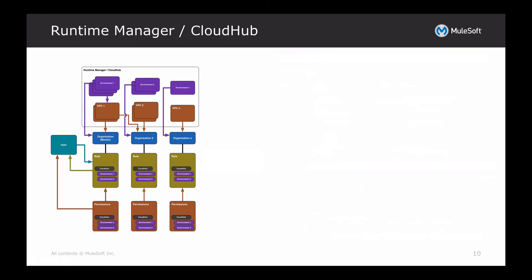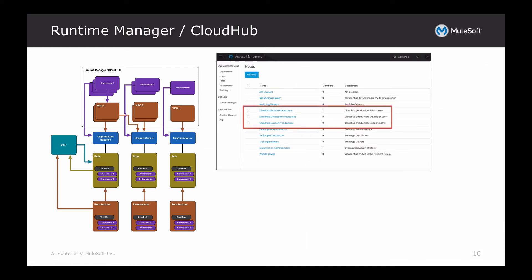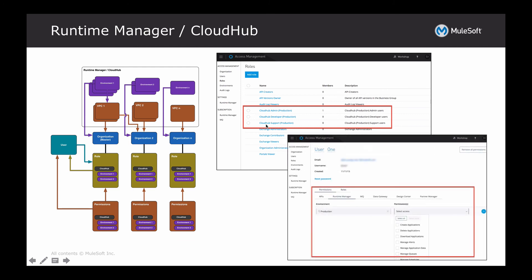Lastly are the roles for Runtime Manager CloudHub. This one's a little different in that when you create a new environment, it'll auto-create the roles specific to those environments. Every environment you create has three sets: the admin, the developer, and the support user. So in this screenshot, for a single production environment, you'd have CloudHub admin production, CloudHub developer production, and CloudHub support production. If you added a sandbox environment, there would be roles for that sandbox as well. From a permissions standpoint, it can get quite granular — down to the specific environment and specific permission of access, such as creating, deleting, or downloading an application.